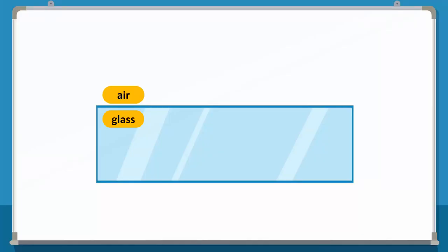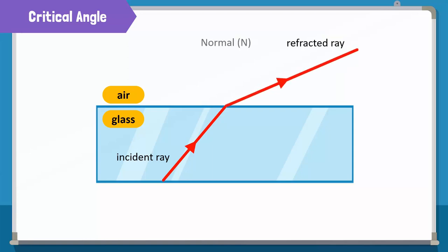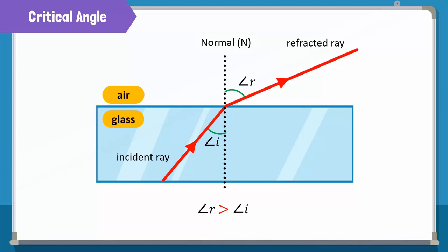Now let's look at critical angle. When an incident ray moves from a dense medium like glass to a rare medium like air at an angle other than zero, the refracted ray bends away from the normal. Remember that the normal refers to an imaginary line which is perpendicular to the surface of a medium. In this case, the angle of refraction is greater than the angle of incidence.